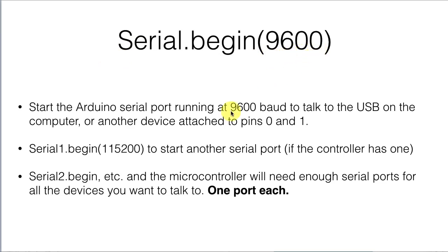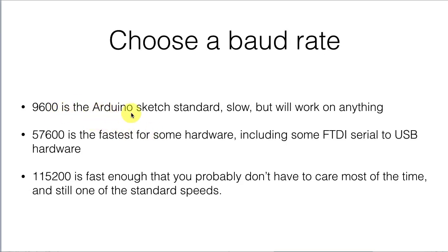You start your Arduino serial port running at 9,600 baud to talk to the USB on the computer, or any other device attached on pins 0 and 1, and you can read back in on the serial port as well. Some microcontrollers have more than one serial port — some even have more than two — but you need one port for every device, so serial ports are only good for talking to one thing at a time. The standard Arduino sketch baud rate is 9,600 — it's slow but works on anything. 57,600 is the fastest for some hardware, and 115,200 is fast enough you probably don't need to care most of the time.